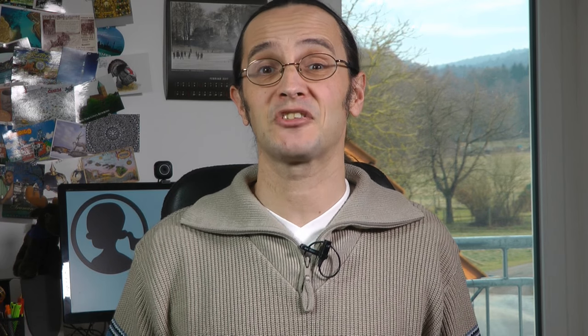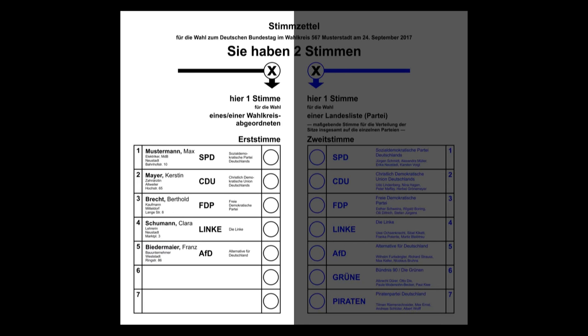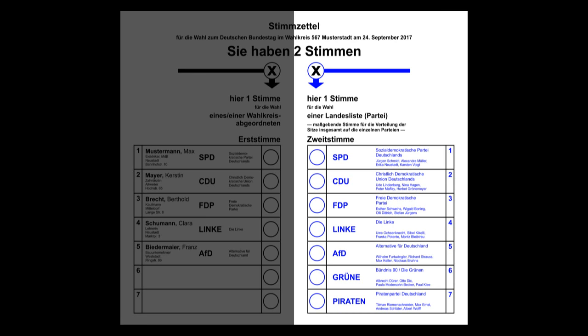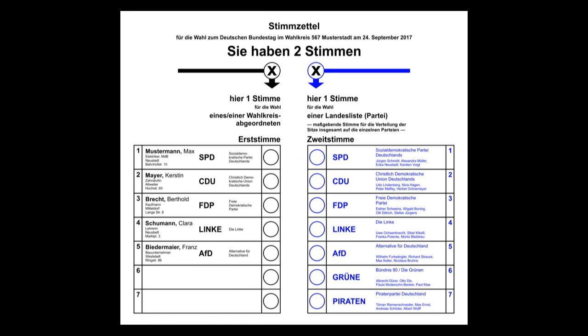Germany is divided into 299 constituencies. Each voter gets a ballot paper with local candidates on one side and political parties on the other. So everybody gets to vote for one candidate and one party list. In each constituency, the candidate with the most votes is directly elected to the Bundestag. If that's where the story ended, then it would be a simple first-past-the-post system, such as exists in, for example, the UK.